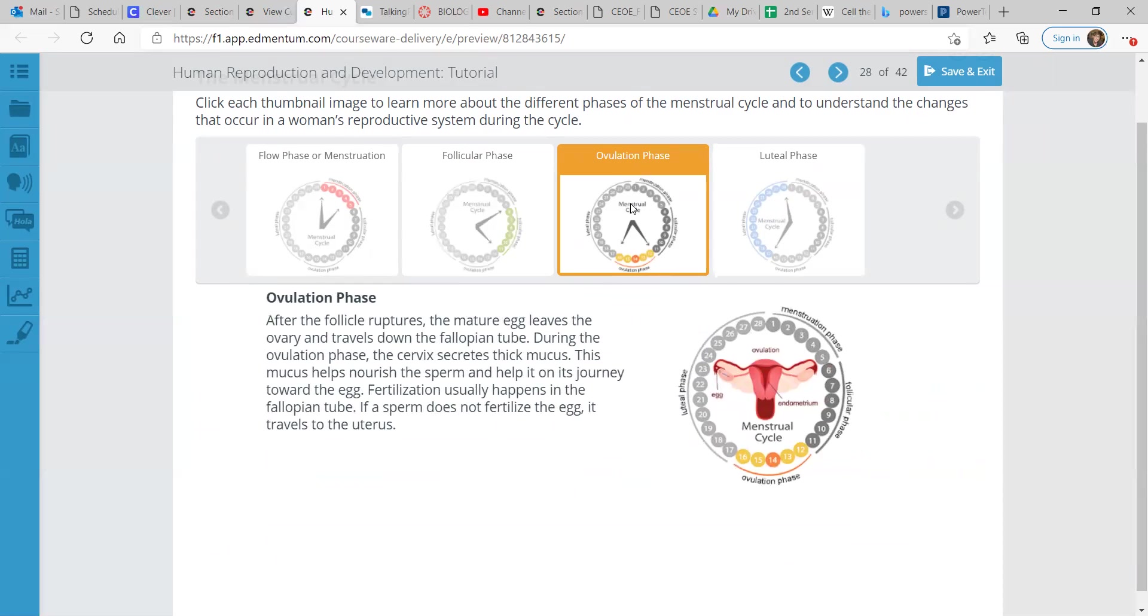The ovulation phase. After the follicle ruptures, the mature egg leaves the ovary and travels down the fallopian tube. During the ovulation phase, the cervix secretes thick mucus. This mucus helps nourish the sperm and help it on its journey toward the egg. Fertilization usually happens in the fallopian tube. If a sperm does not fertilize the egg, it travels to the uterus.